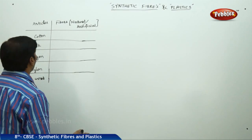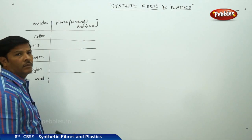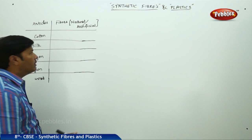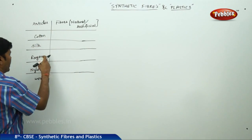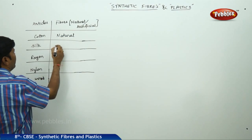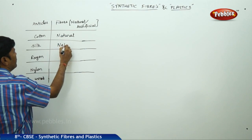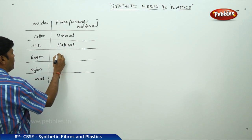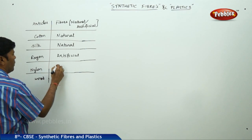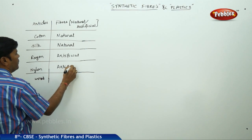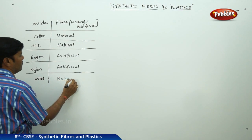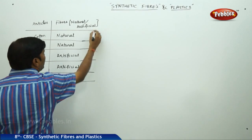Look at this table. The articles we are taking lead to fiber formation. If you take cotton, it's a natural fiber. Silk is also a natural fiber. Rayon is an artificial fiber. Nylon is also artificial. And wood is again a natural fiber.